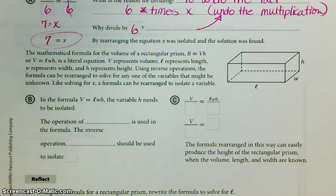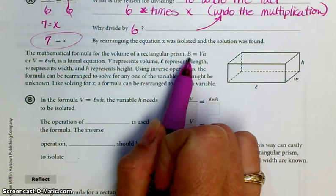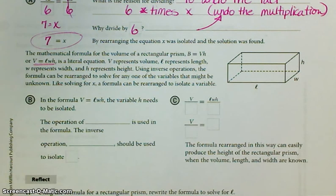The mathematical formula for the volume of a rectangular prism, V equals lwh, or in more common terms, volume equals length times width times height, is a literal equation. V represents volume, l represents length, w represents width, and h represents height. Using inverse operations, the formula can be rearranged to solve for any one of the variables that might be unknown.